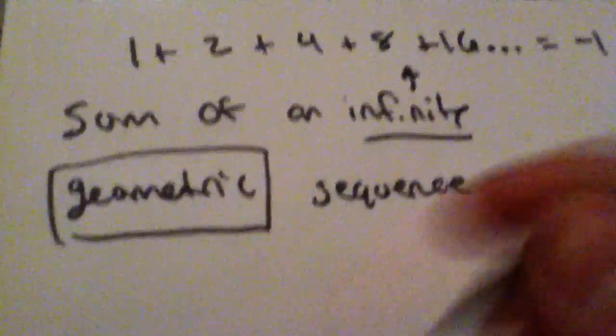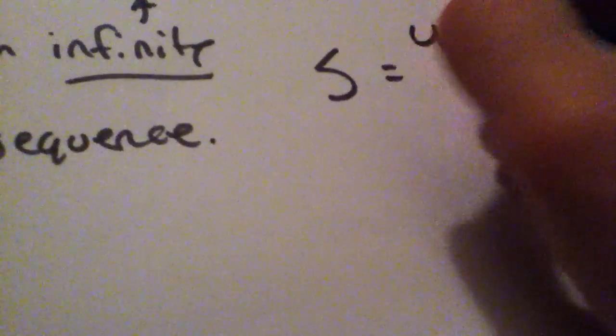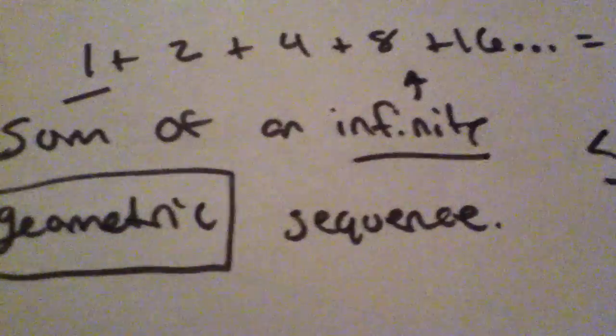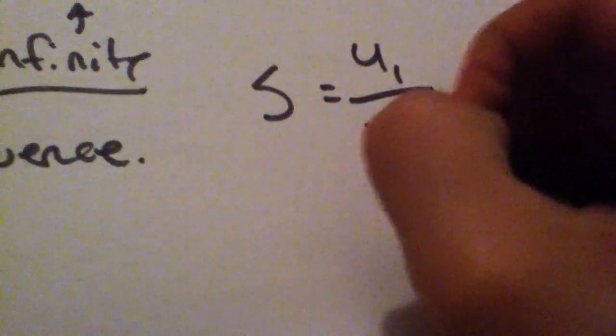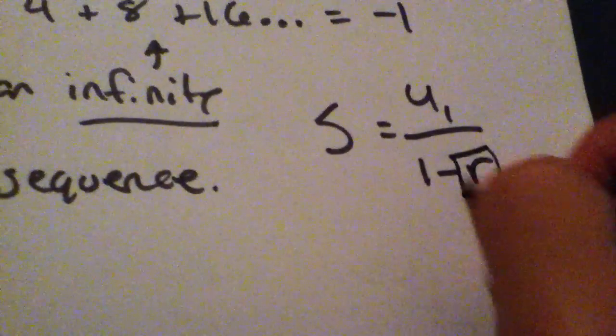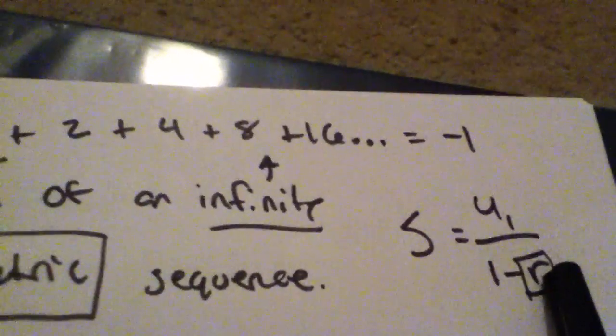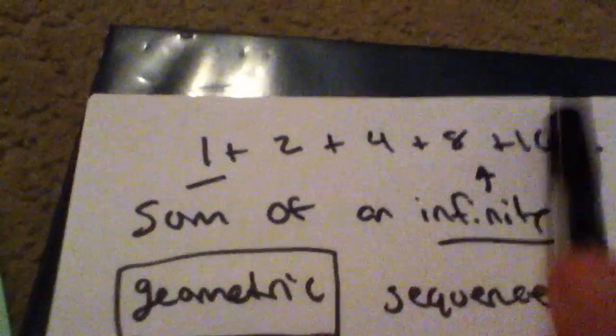The equation we use to find the sum of a geometric sequence is S equals U₁, which is the first term, all over 1 minus R. The first term would be 1. The R, in this case, is the value we use to multiply these numbers.